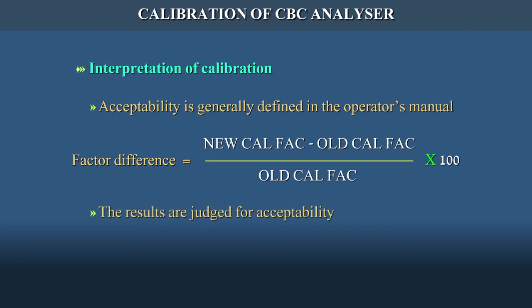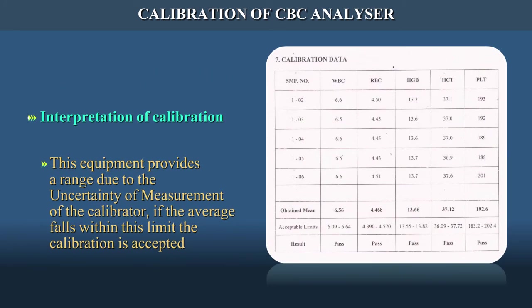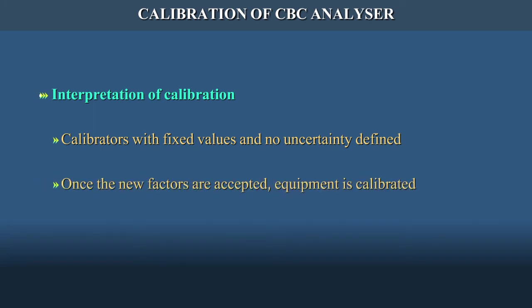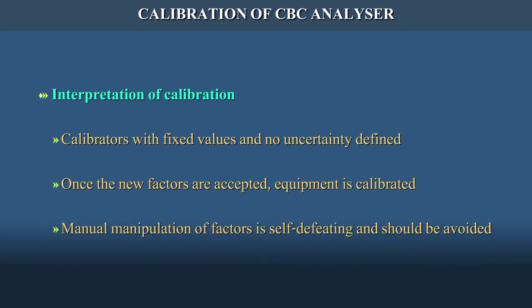The results are judged for acceptability. In the case of this equipment, which provides a range due to the uncertainty of measurements of the calibrator, if the average falls within this limit, the calibration is accepted. In fixed calibrators, the factor changes should be documented. Once the new factors are accepted, the equipment is calibrated. Manual manipulation of factors is self-defeating and should be avoided.